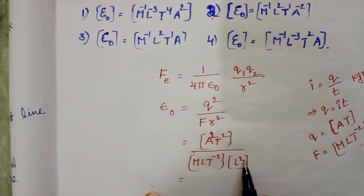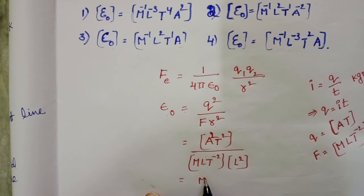L¹ × L² becomes L³. So mass goes to numerator as M⁻¹, length becomes L⁻³, and T⁻² goes to numerator,